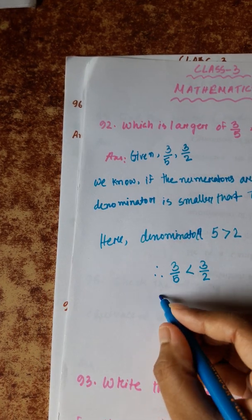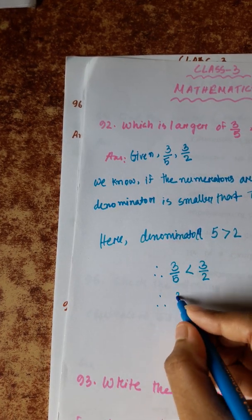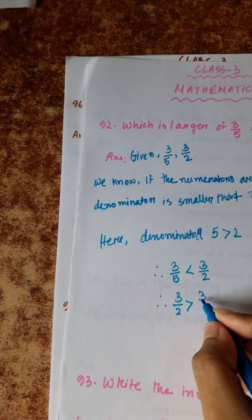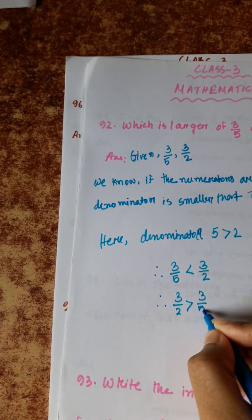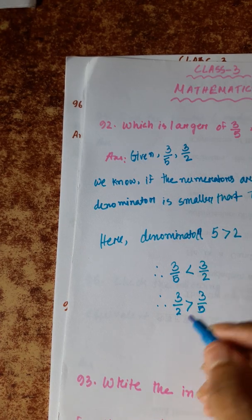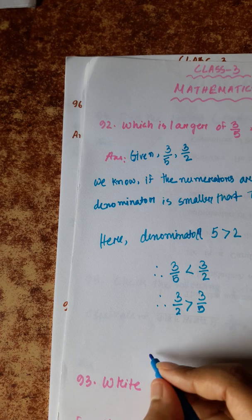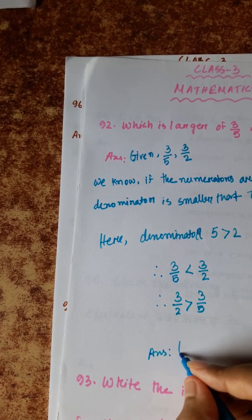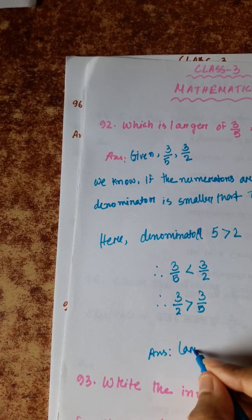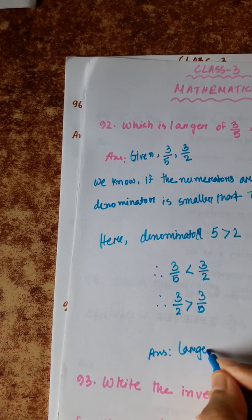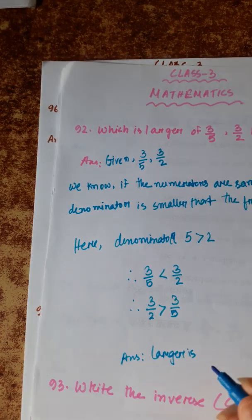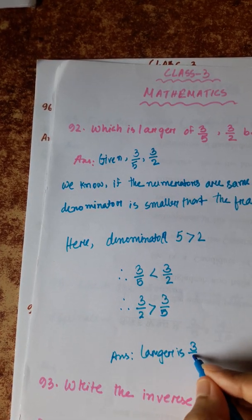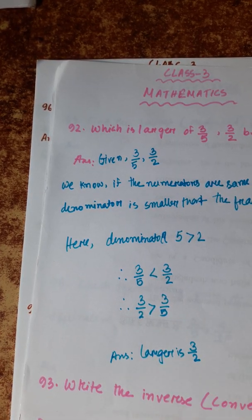So 3/2 is greater than 3/5. The answer: the larger fraction is 3/2.